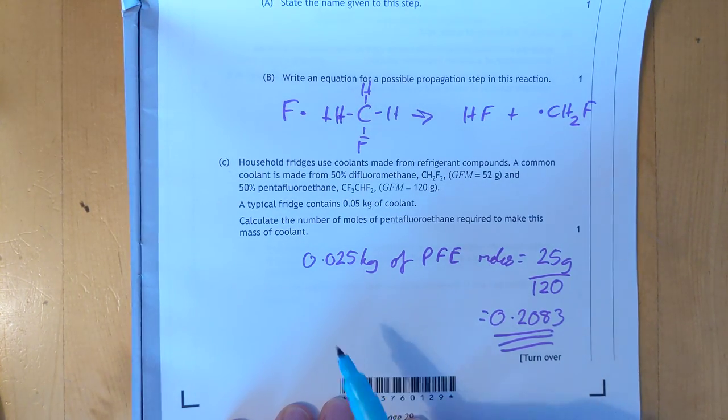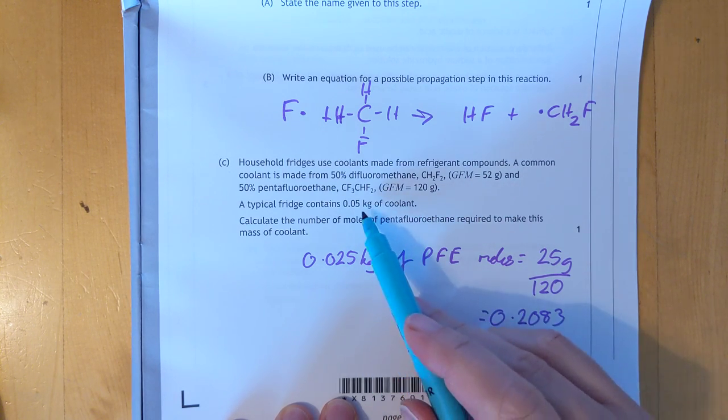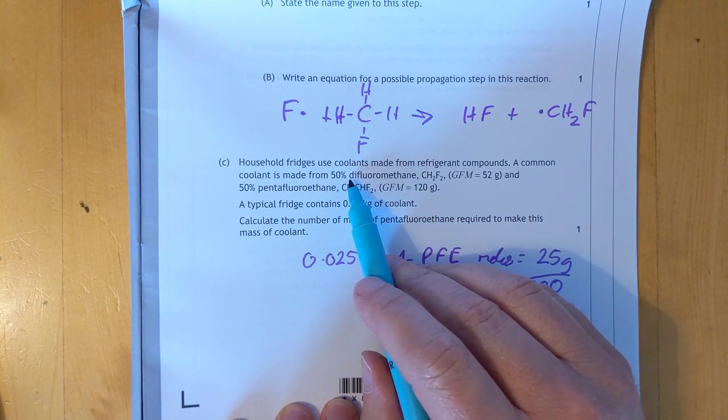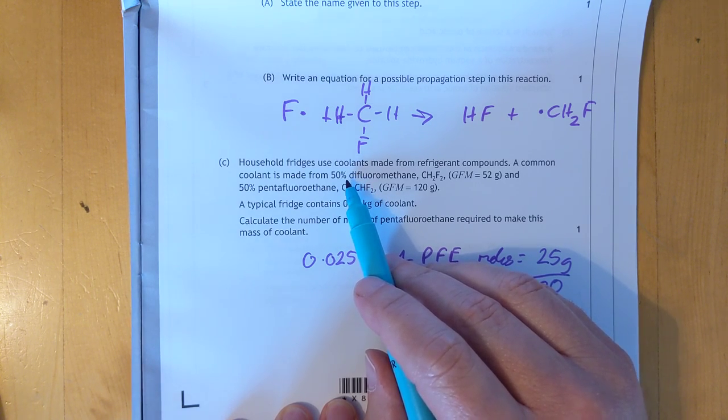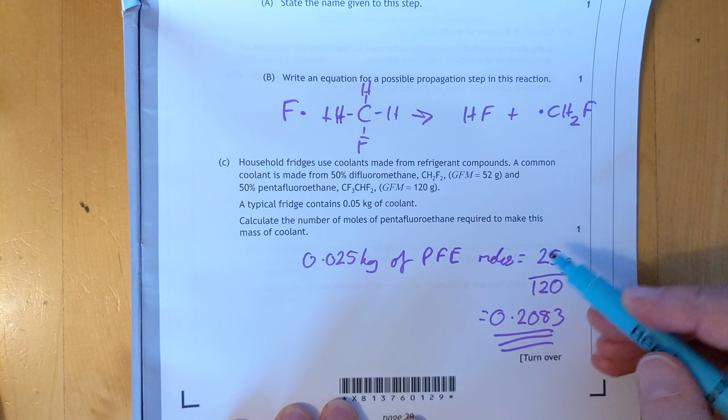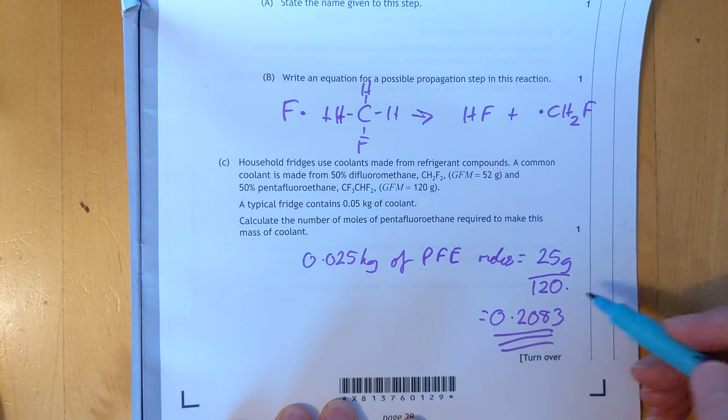Let's do this last proportion calculation. Right, are we on camera? Okay, so 0.025 because it's 50% of the mass. By the way, I'm assuming they should have said 50% of the mass, just in case you thought that was 50% of the moles. Interestingly. So 0.025 turn it into grams, of course. Don't put 0.25 over there because the gram formula is 0.25.